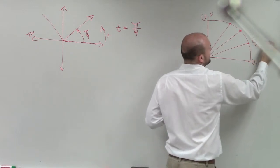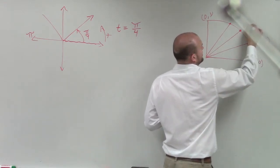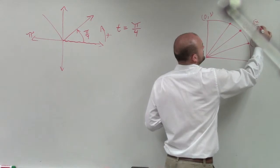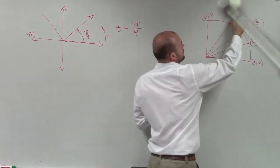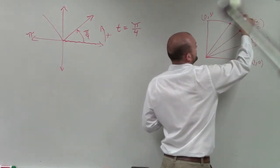Square root of 3 over 2 comma 1 half, square root of 2 over 2 comma square root of 2 over 2, 1 half comma square root of 3 over 2.